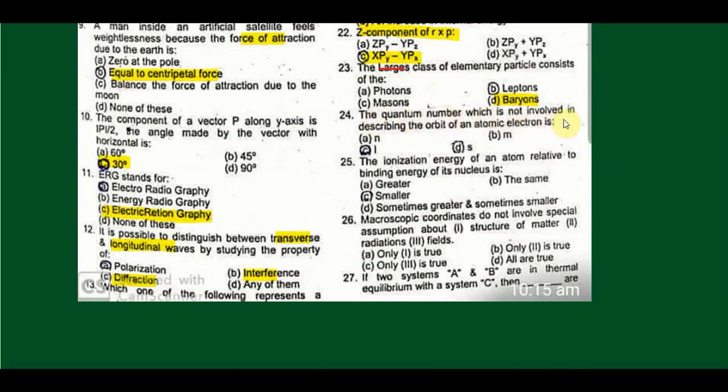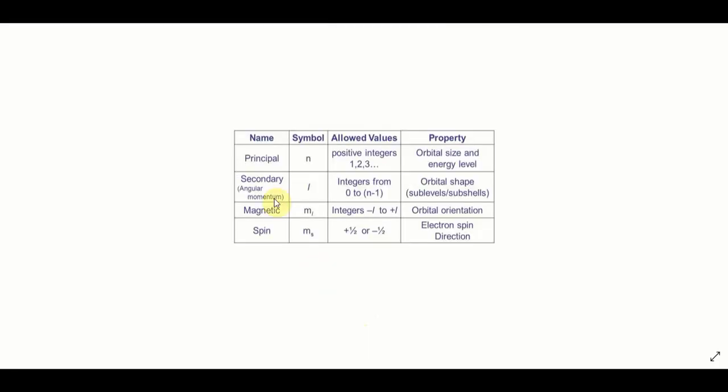The quantum number which is not involved in describing the orbit of an atomic electron is: we have four quantum numbers: principal, angular momentum quantum number, magnetic quantum number, and spin quantum number. Among all these, spin only tells about the direction, whether the electron spin will be up or down. The remaining quantum numbers describe the orbital orientations of electrons. So the correct answer here is spin quantum number.